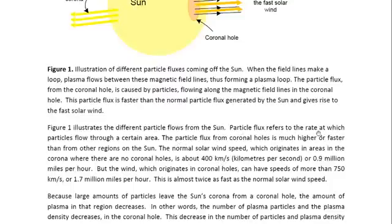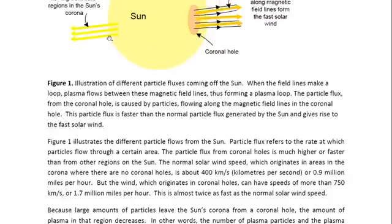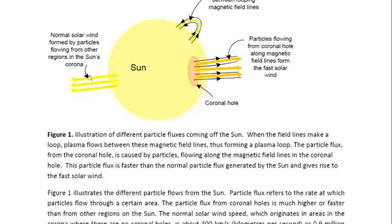Now, particle flux refers to the rate at which particles flow through a certain area. The particle flux from coronal holes is much higher or faster than from other regions on the Sun. And what we see here, these arrows represent the normal solar wind, which originates in the Sun's corona. The fast solar wind, though, originates below the surface of the Sun, or closer to the surface.